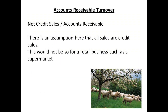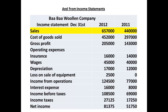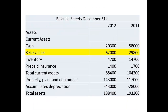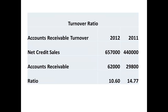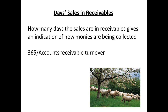To determine the accounts receivable turnover, we are going to assume that all sales are being made as credit sales and that there are no cash sales. Whilst this is fine for many businesses, it would not really be applicable to a supermarket where almost all sales are likely to be made on a cash basis. To obtain the ratio, we divide net credit sales by the figure for accounts receivable. The figures for sales come from the income statements and the figures for receivables from the balance sheets. The accounts receivable ratio has fallen from 14.77 in 2011 to 10.60 in 2012.